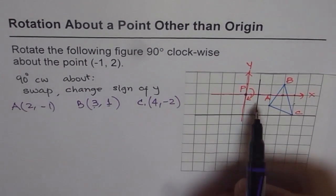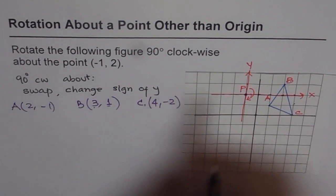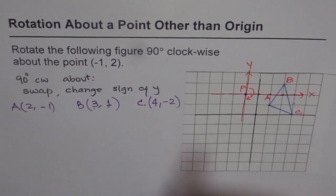3 right, 1 up, 1, 2, 3, 1 up, we reach B. And A is 2 right, 1 down, 1, 2, 1. That's correct.